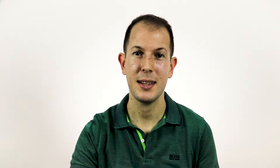Let's get started. Real conditional sentences are made in the present simple tense and are used to talk about conditions that are real and can happen. While the conditional clause — the sentence which has the conditional verb — is made in the present tense, the main clause, which is the result of the condition, is made in either the future simple or present simple tense. In order to make a real conditional verb, we add the suffix sa/se after the present tense suffix.